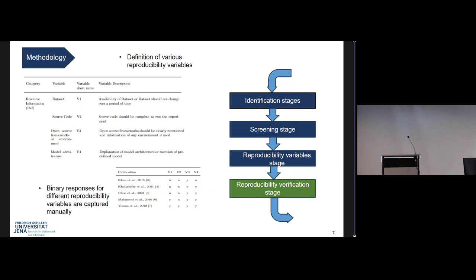Once we had these variables with exact definitions for what we were looking for in each paper, we went through one paper at a time manually and tried to record binary responses. Binary responses means whether that particular variable is available in the paper or not. For example, as you can see on screen, we looked for whether the dataset, source code, or model architecture is available, or whether it is open source or not. Then we looked for various variables one by one and recorded our responses.